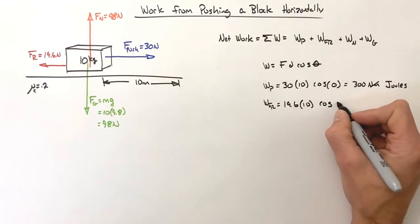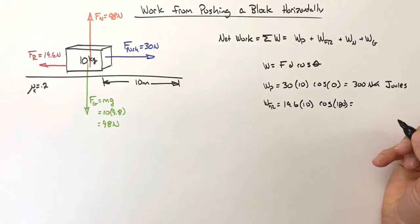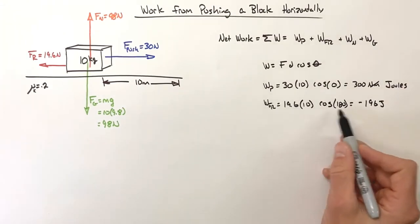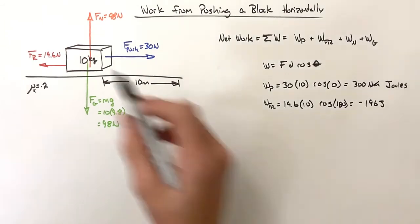That means the total work done by friction is going to be negative 196 joules. It's negative because these forces are in opposite directions.